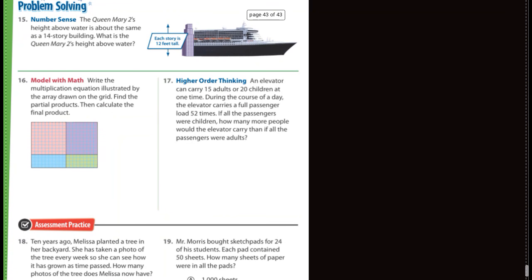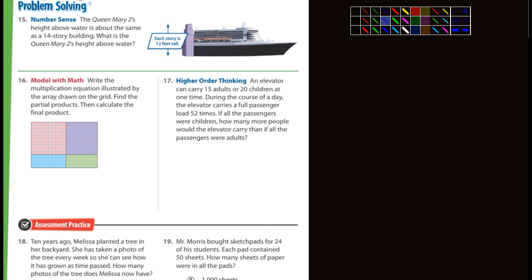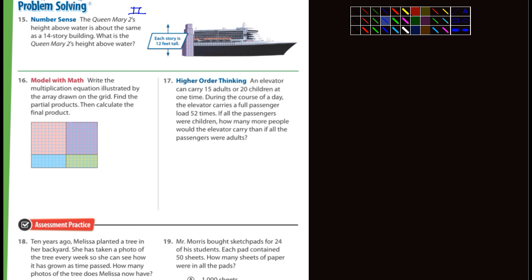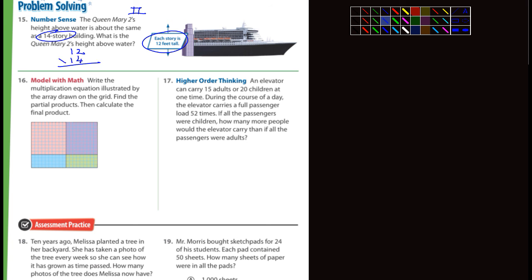Let's look at the last page — problem solving. The Queen Mary 2's height above water is about the same as a 14-story building. What is the Queen Mary 2's height above water? Each story is 12 feet tall and they said 14 stories, so we're talking about 12 times 14.